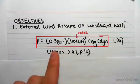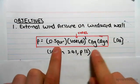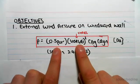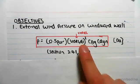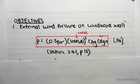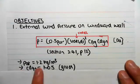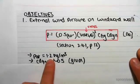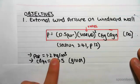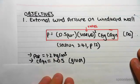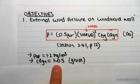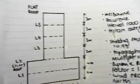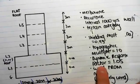In this video, I'm going to be finding everything except V-theta, which we know from the previous video. The density of air is 1.2 kilograms per meter cubed — we can see that from the standard. And the C-dynamic, the dynamic response factor, is 1.05, which was given in the question.